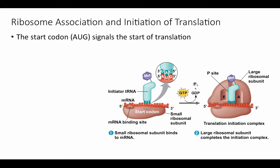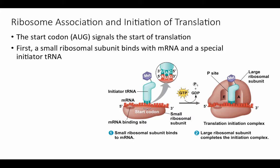Much like transcription, translation has three basic phases: an initiation phase, an elongation phase, and a termination phase. For initiation, the start codon AUG signals the start of translation. A small ribosomal subunit binds with the mRNA and a special initiator transfer RNA. That initiator tRNA carries the first amino acid in any polypeptide — methionine — and bonds to wherever it finds that AUG sequence on the mRNA.